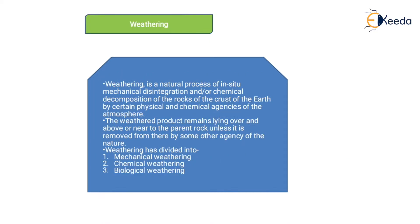The main agent to discuss is weathering. Weathering is a natural process of in-situ mechanical disintegration and/or chemical decomposition of the rock of the Earth's crust by certain physical and chemical agencies of the atmosphere. Because of weathering, the parent rock present on the surface breaks and forms different fragments. There are three types of weathering: mechanical weathering, chemical weathering, and biological weathering. The weathered product remains lying over or near the parent rock unless removed by some other agency.